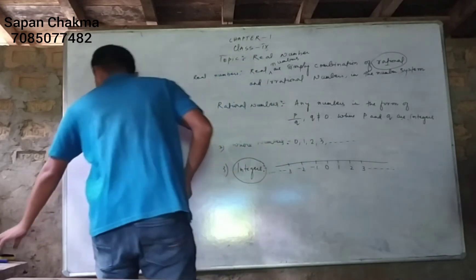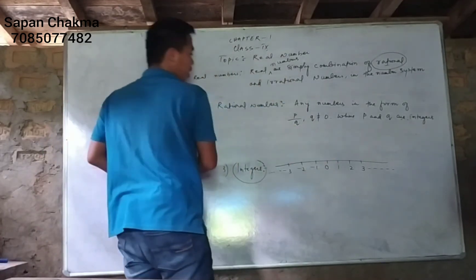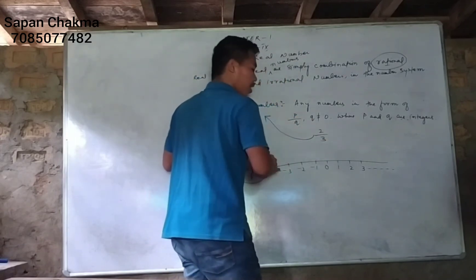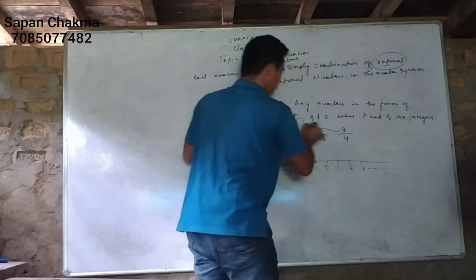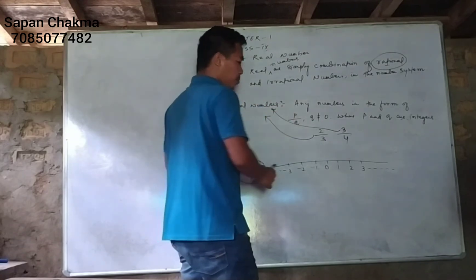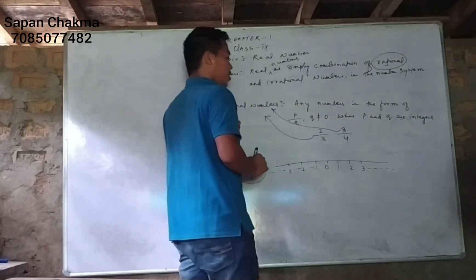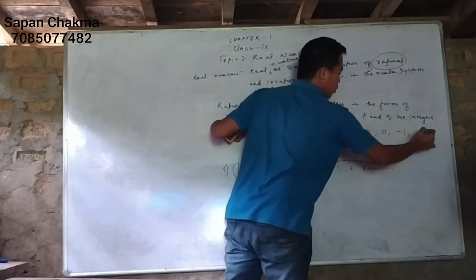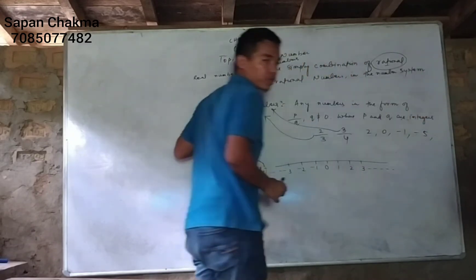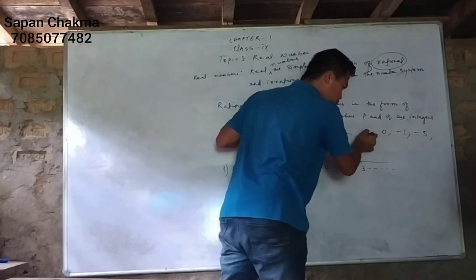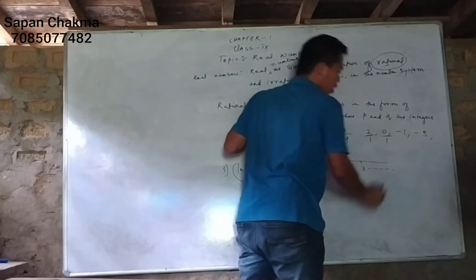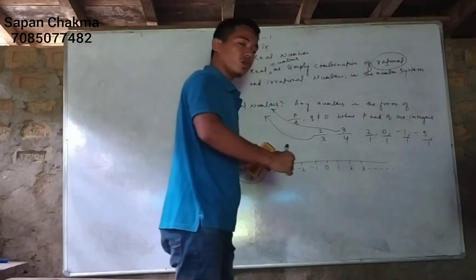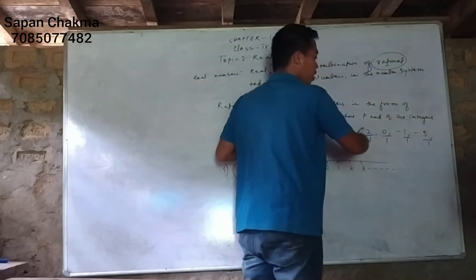For example, 2 divided by 2 is also a rational number. 2 by 2 is a rational number. We have rational numbers such as 2, 0, minus 1, and minus 5 — all are rational numbers. The number 1 is also a rational number.